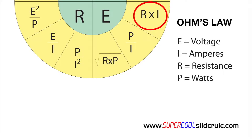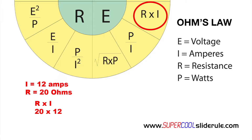We will be using this equation. For this example, I will use 12 amps and a resistance of 20 Ohms. We substitute these values into our equation, replace the R with 20, replace the I with 12, multiply, our answer is 240.